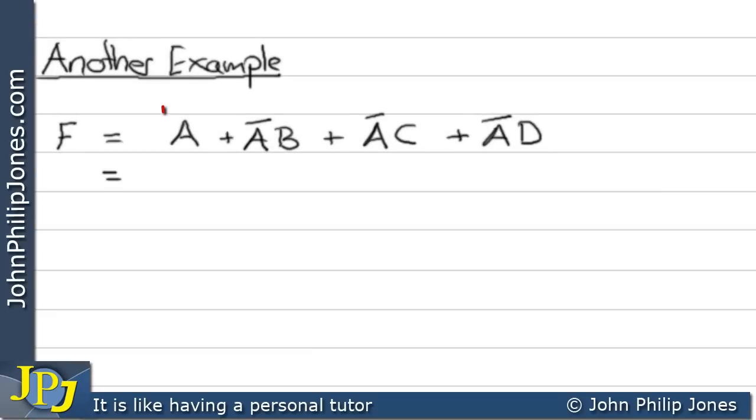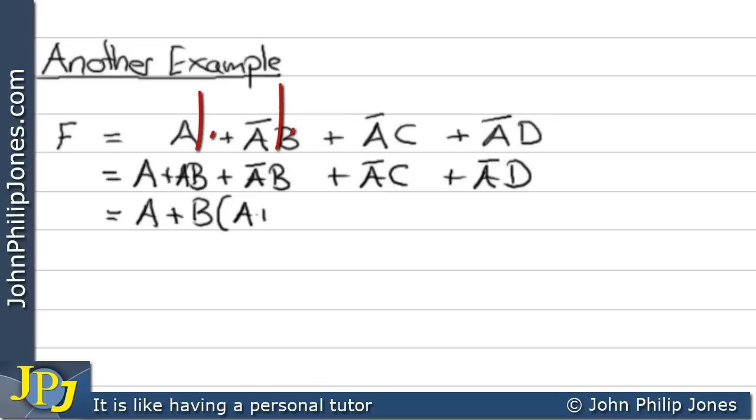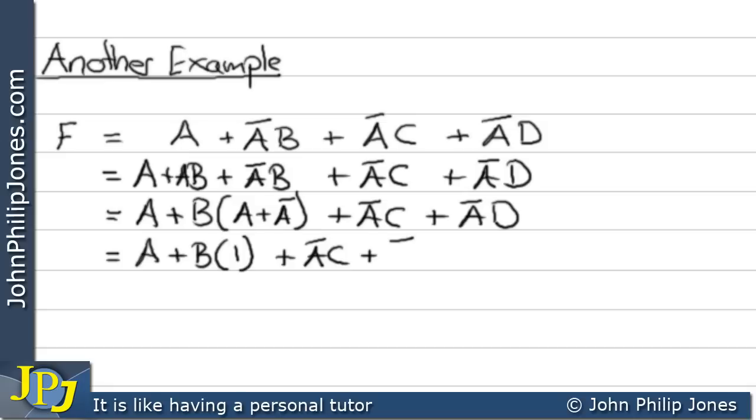Let's look at another example. We can replace the A by A or A and B, and then write the other min terms down as you can see here. Then we can say let's take the A and write it down, and then the B is common to the next two, so we'll take the B outside of the brackets and we can see in the brackets we have A or not A. Therefore that becomes A or B and 1.